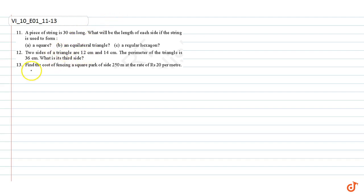We know that the perimeter of a square is 4 times side, which is given to be equal to 30 cm long. Therefore, side of the square equals 30 cm divided by 4, equal to 7.5 cm.